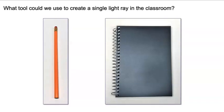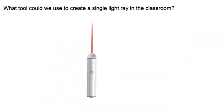What tool could we use to create a single light ray in the classroom? We could use a laser pointer. It makes one ray of light that we can point at something. Hmm. But a laser pointer could be dangerous. It could damage a person's eyes. Maybe we could use a flashlight instead.